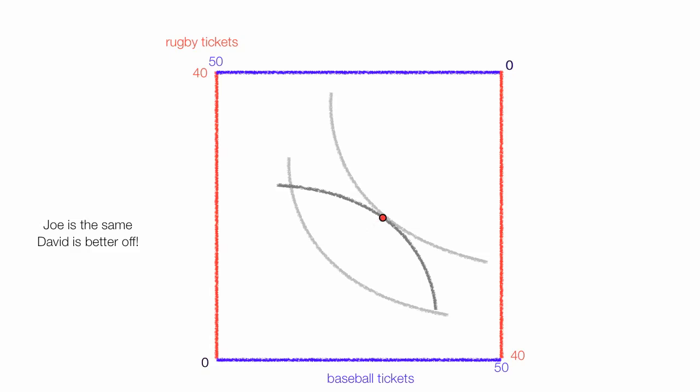So he's able to reach a higher level of utility and Joe is no worse off. So they would gravitate to this point there where the two indifference curves are the same. That's called a Pareto optimality.